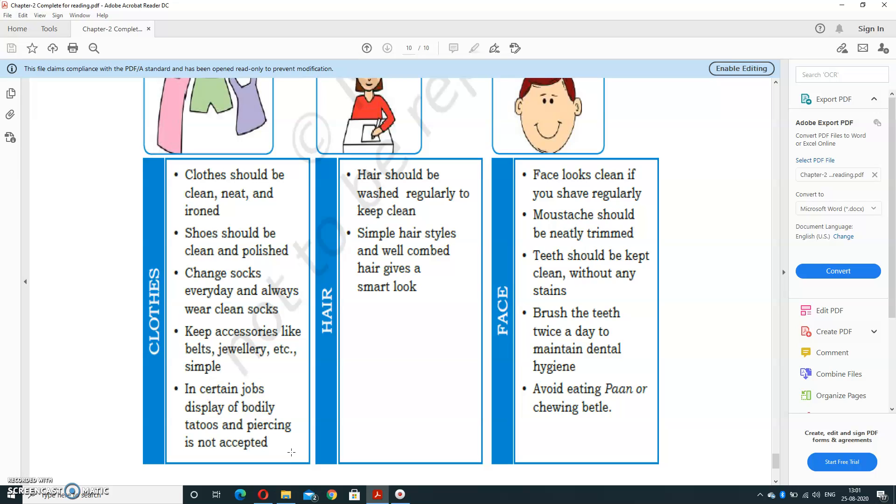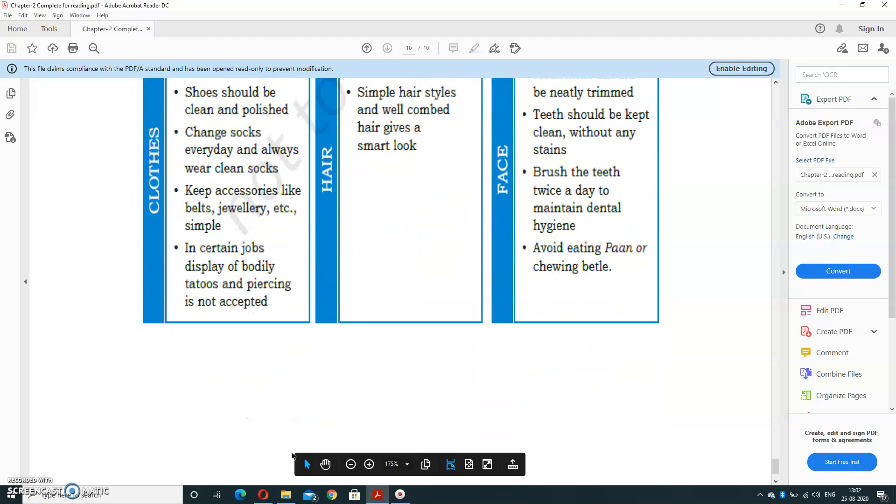Hair should be washed regularly to keep it clean. Simple hairstyles are welcome. Face should look clean if you shave regularly. Mustache should be neatly trimmed. Teeth should be kept clean without any stains. Brush teeth twice a day to maintain dental hygiene and avoid eating pan or chewing betel. These are some precautions for grooming. This chapter is now finished. Thank you, have a nice day.